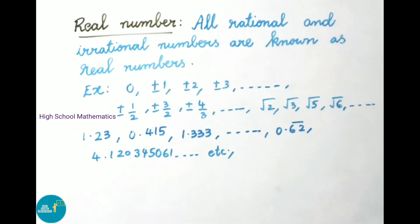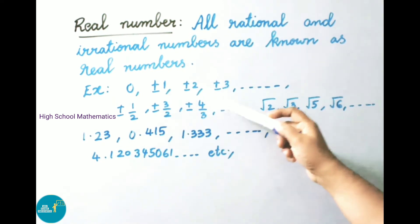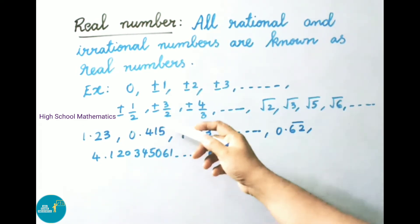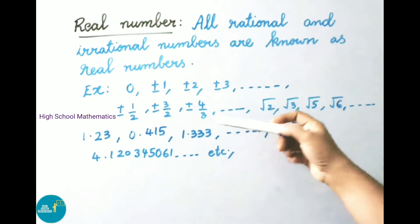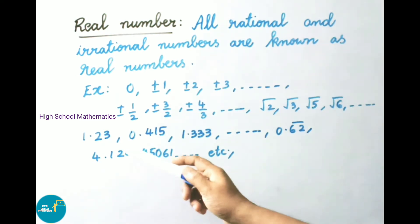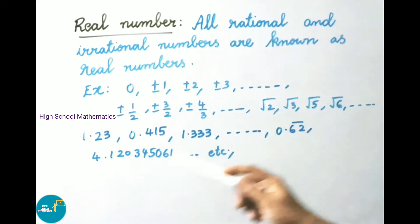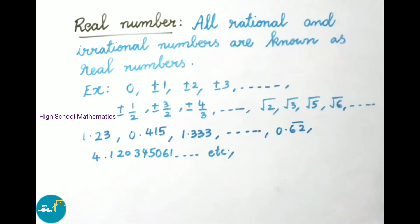Now let us see what is a real number. All rational and irrational numbers are known as real numbers. Examples include: 0, ±1, ±2, ±3, etc.; ±1/2, ±3/2, ±4/3, etc.; square roots such as √2, √3, √5, √6; and decimal numbers like 1.23, 0.415, 1.333..., 0.62 bar, and so on. All rational numbers and irrational numbers together are called as real numbers.